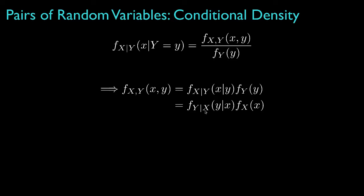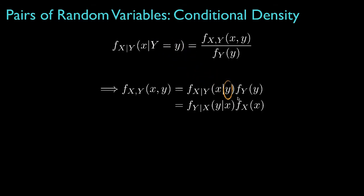Now, rather than use the explicit notation that we are conditioning on the event that the conditioning random variable, say y, takes the value lowercase y, we'll use an implicit notation by only writing the value that the variable takes, which we've also done when we condition on the random variable x.